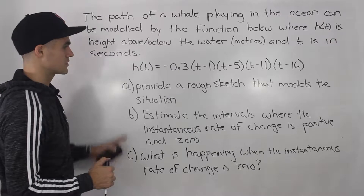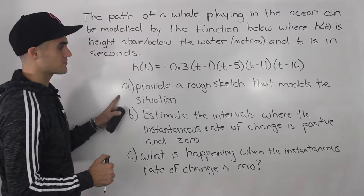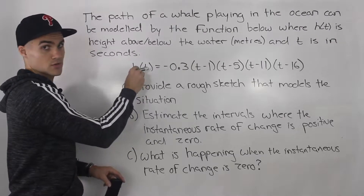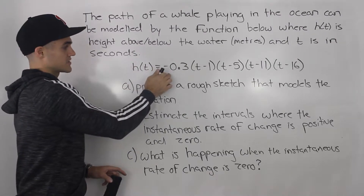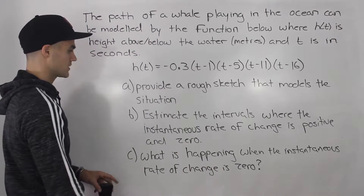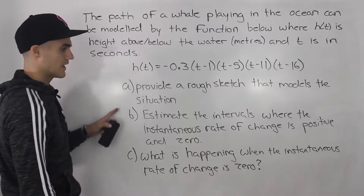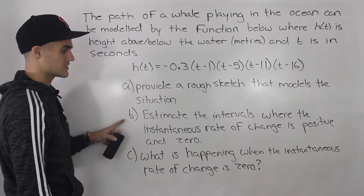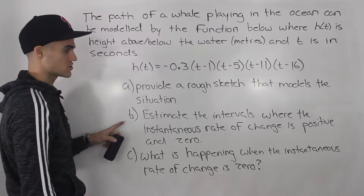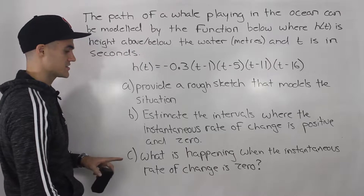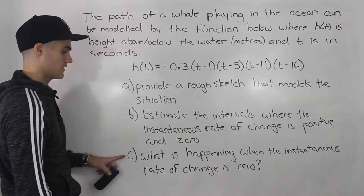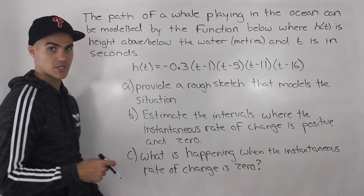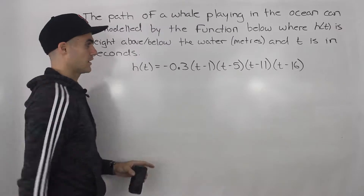There are three parts to this question. First, we have to provide a rough sketch that models the situation. Second, estimate the intervals where the instantaneous rate of change is positive and zero. And then part c, what is happening when the instantaneous rate of change is zero.